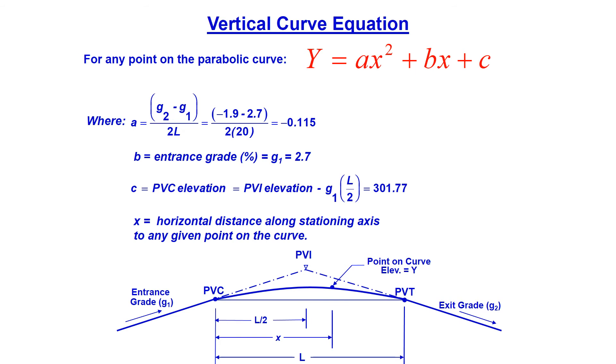b is our entrance grade, which is G1 = 2.7, and c is our PVC elevation, which we solved for previously: 301.77.